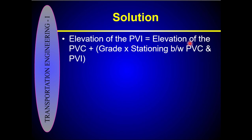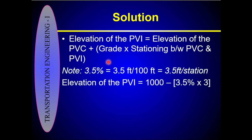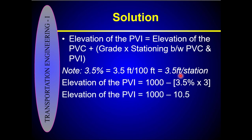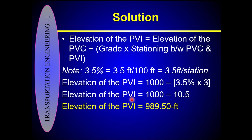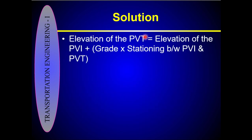Now calculate the elevation of the PVI. The equation is: elevation of PVI = elevation of PVC + G1 × distance between PVC and PVI. The elevation of the PVC is 1000 feet, G1 is minus 3.5%, and the distance between PVC and PVI is 300 feet. Since this is a sag vertical curve, the elevation should be lower than the PVC. The elevation of the PVI is 1000 + (−3.5)(300/100) = 989.5 feet.